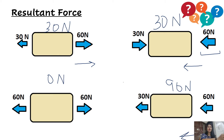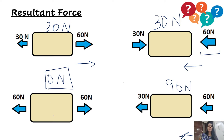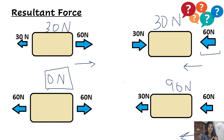If the forces cancel each other and the resultant force is 0 Newton, then the net force acting on the body is a balanced force. If there is some magnitude and a direction to the resultant force, then the force applied is an unbalanced force. For a balanced force the resultant is 0 Newton, there is no change in the state of motion — the object will remain at rest if it is at rest, and remain in motion if it is already moving.